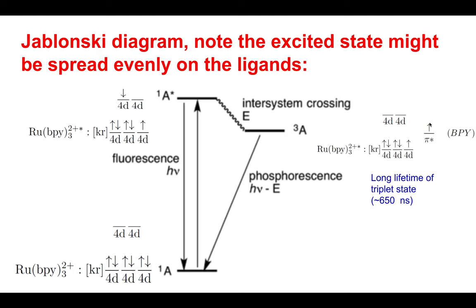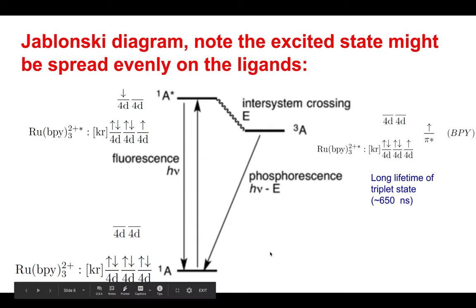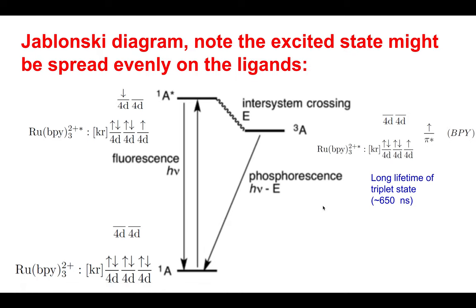Now it's going to hang up on this ligand for about 650 nanoseconds, and then it's going to decay and emit a photon of about 610 nanometers. We call this decay phosphorescence, because it's at a longer wavelength — lower energy — than the incoming photon.